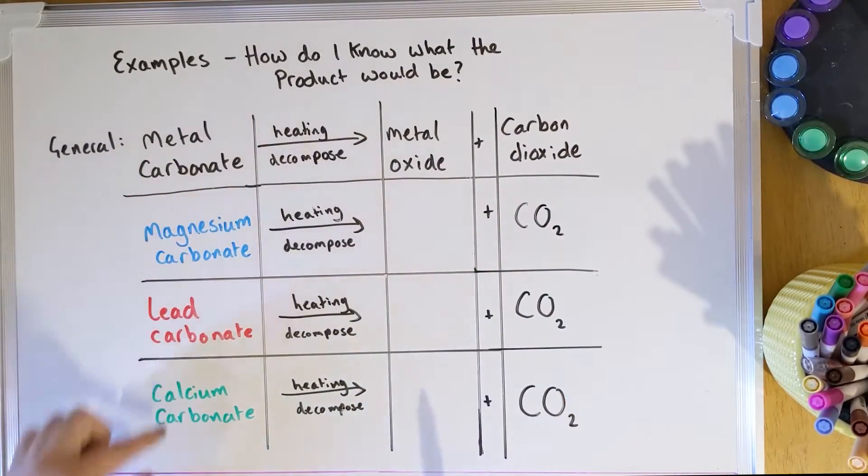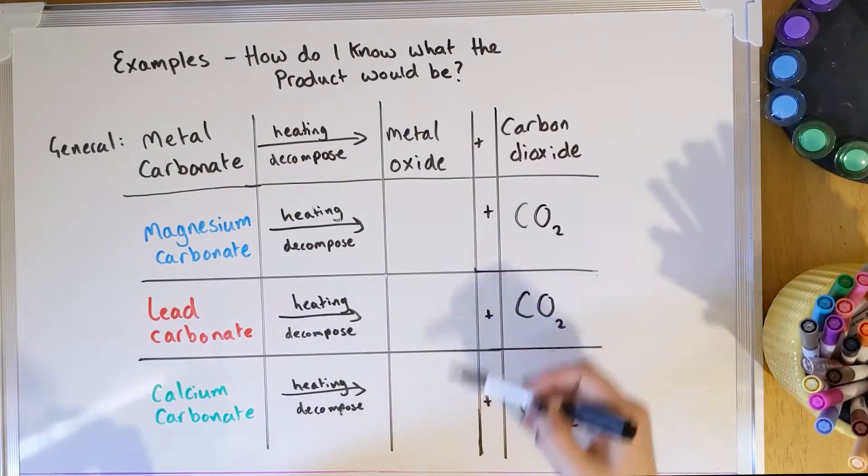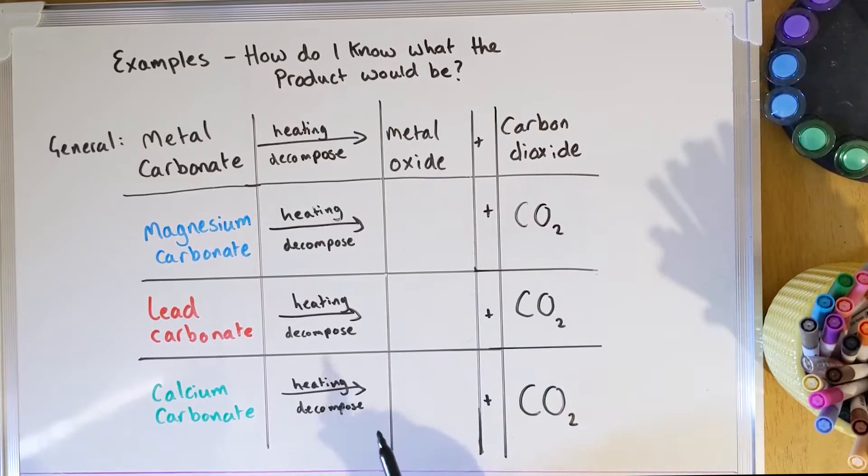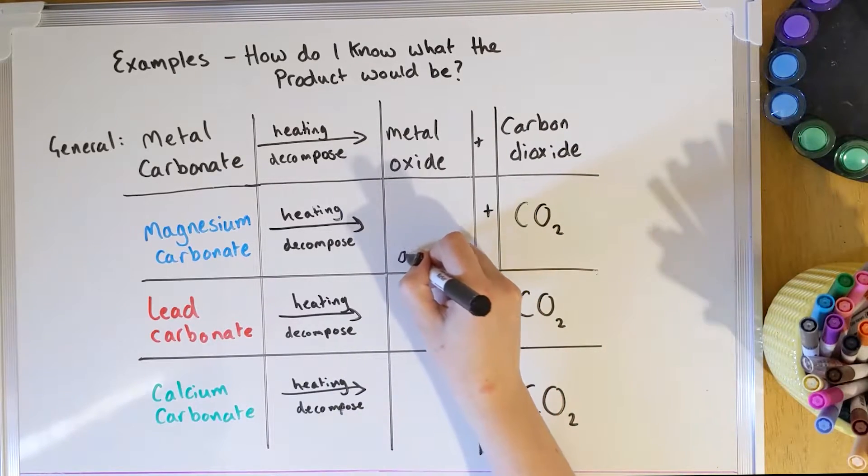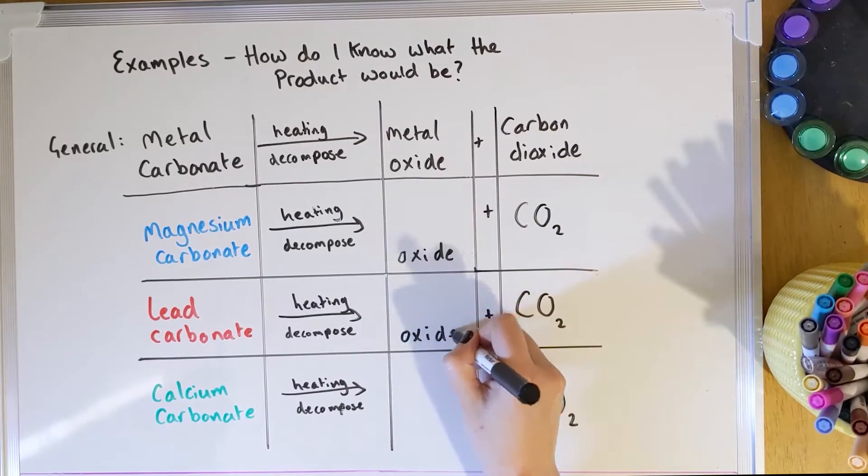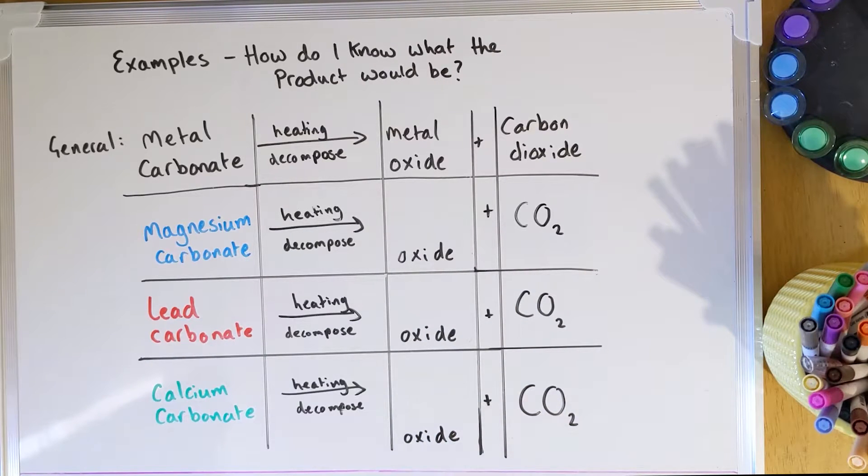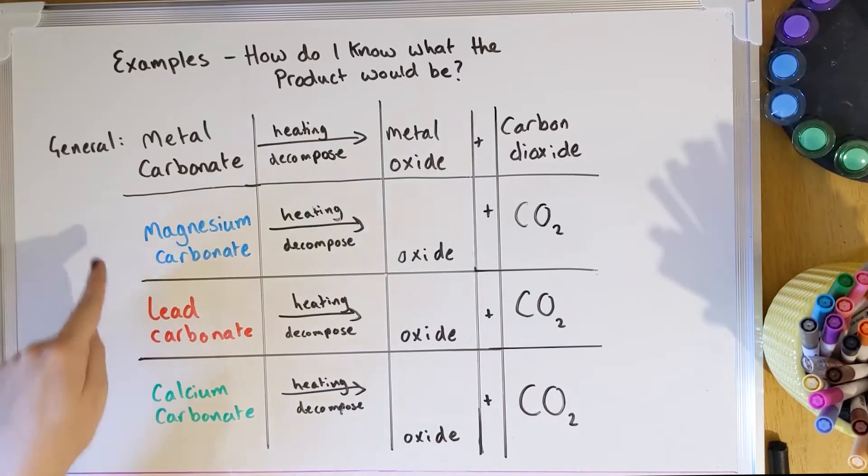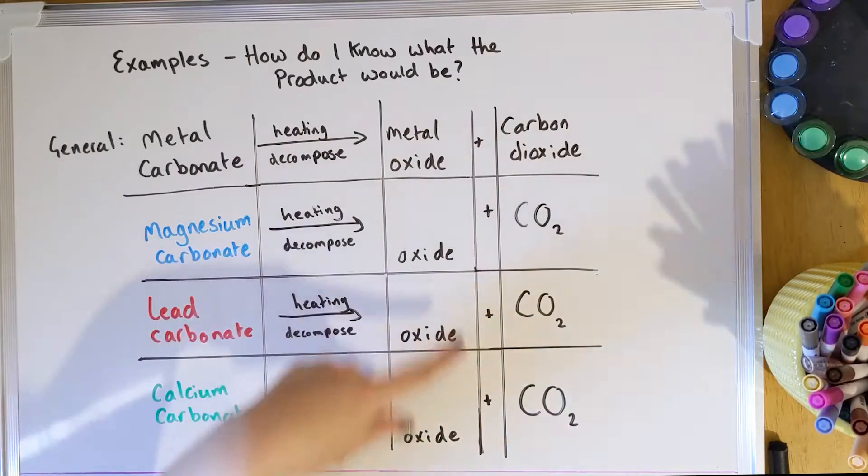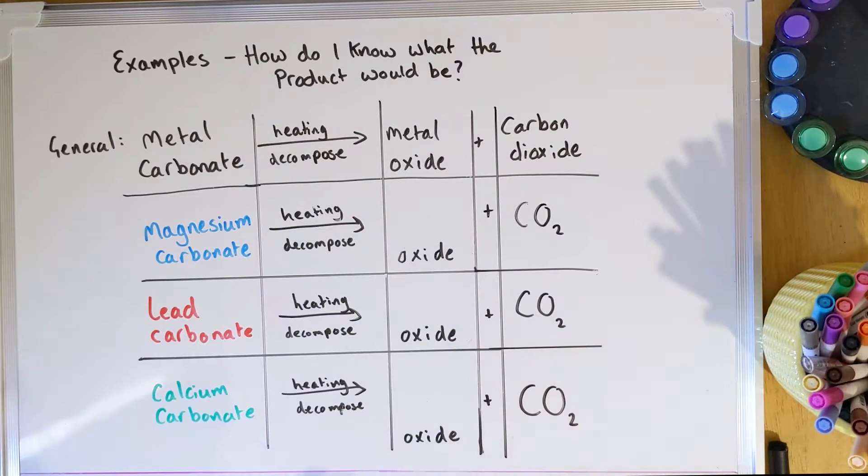So we know that these are all carbonates and all of these are going to be metal oxides. So because I know they're all going to be called oxide, I'm going to write all the oxides in now. Okay, now all that's left to do is to look at the names of our different metals in our carbonates and transfer those over to know what the oxide would be called.